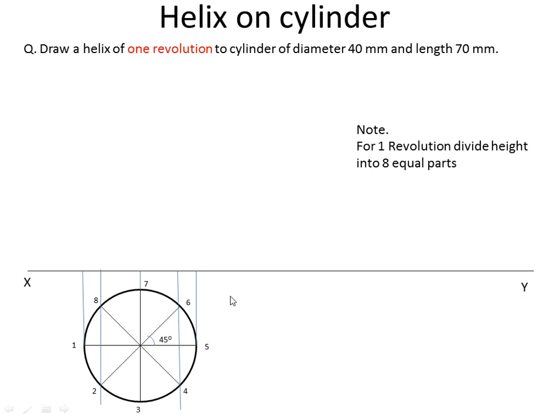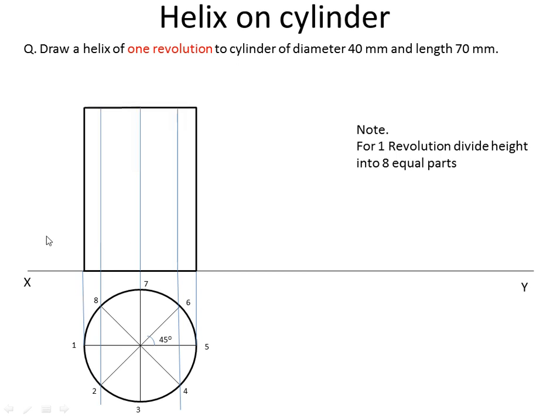Now I will start the front view. In the front view the cylinder looks like a rectangle. So we have started drawing the rectangle. Its height is 70 mm. Transfer all the projections of the generators.